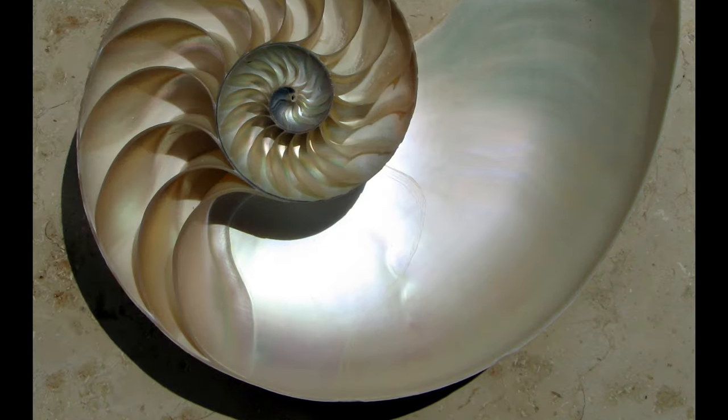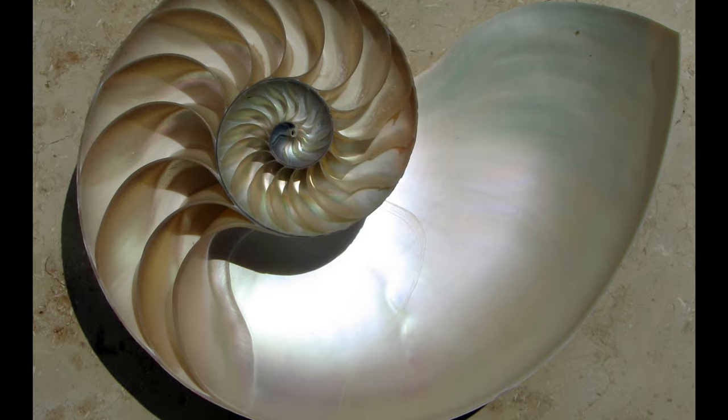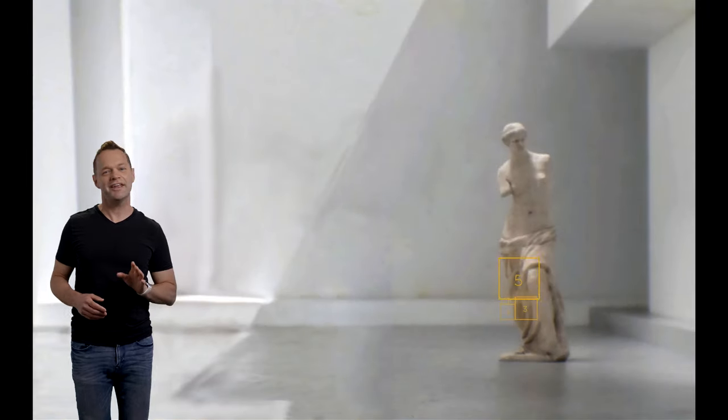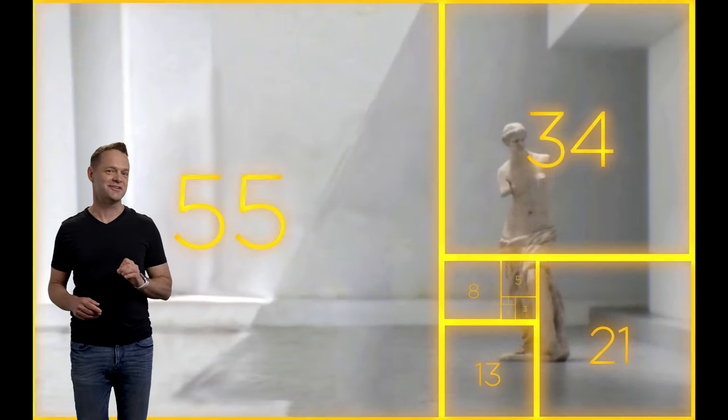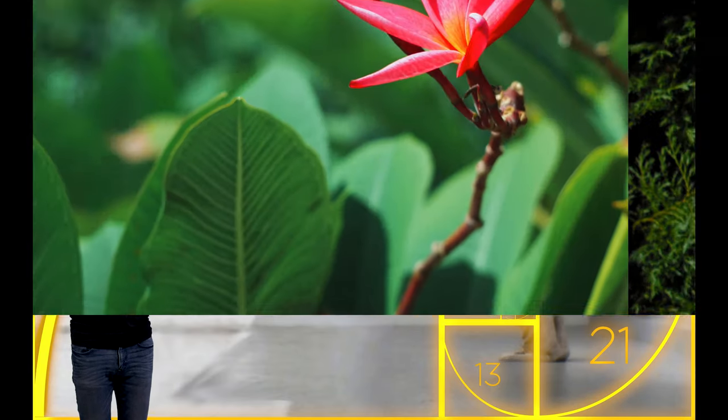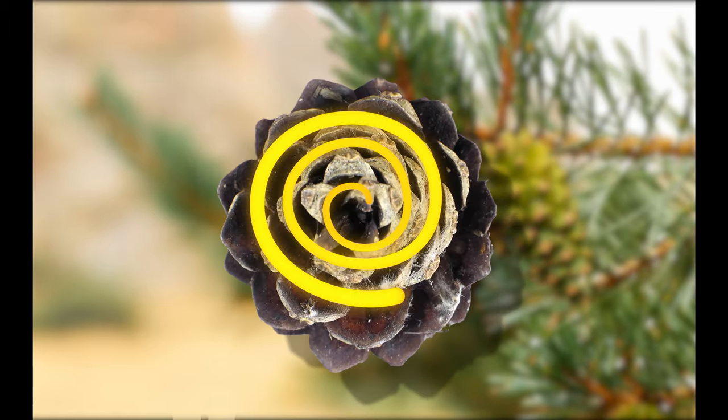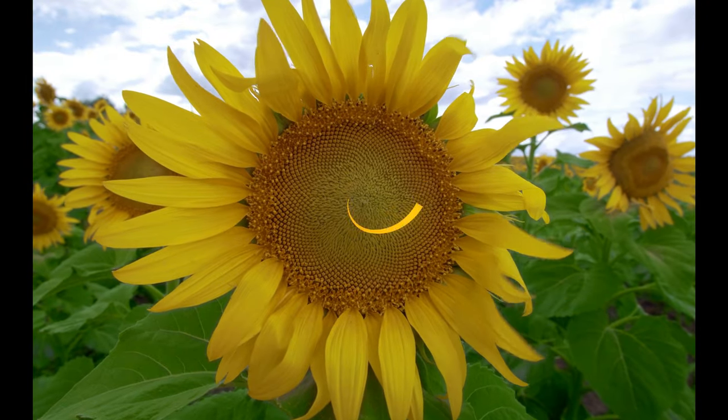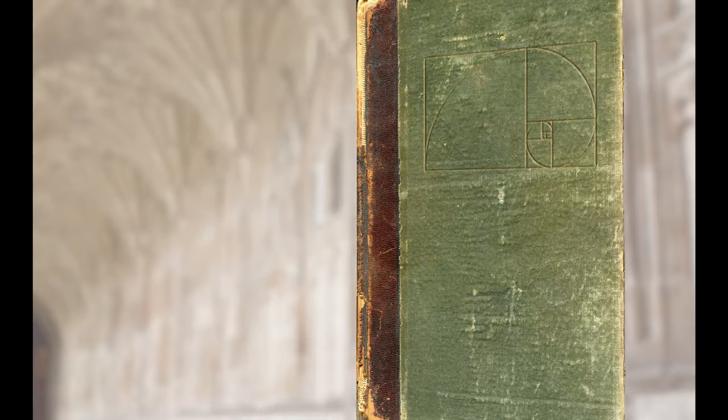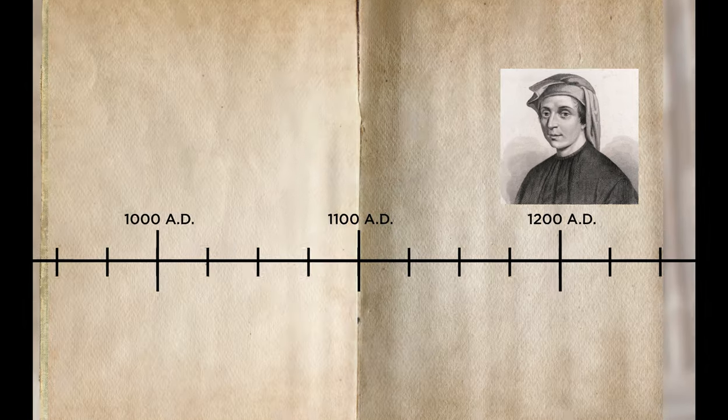One of the most obvious places you can see the golden ratio is in nature. Interestingly, and I imagine many of you out there don't know this, but these Fibonacci numbers correspond to the number of petals on a flower, seeds in a pine cone, and even spirals in a sunflower. The history of the golden ratio goes back far beyond Fibonacci in the 1200s.